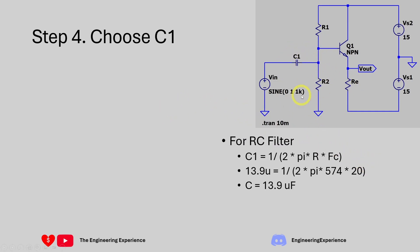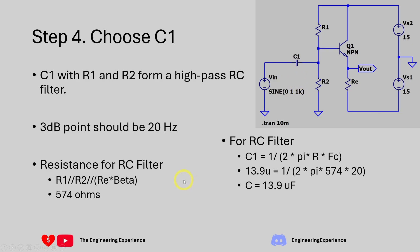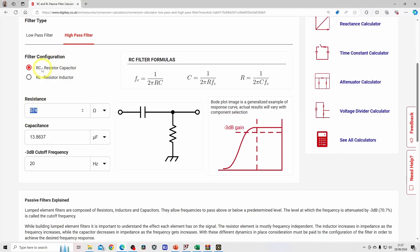For step 4 we need to choose the value of C1. This is a high-pass RC filter, and the load for the RC filter is R1, R2, and a function of RE in parallel. We need to set the minus 3 dB point to 20 Hz. The resistance looking into the base node — R1, R2, and RE times beta in parallel — gives a load resistance of 574 ohms. Plugging those numbers into an RC filter calculator at 574 ohms and 20 Hz gives a capacitance of 13 microfarads.